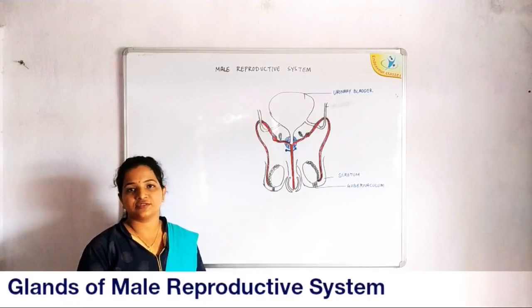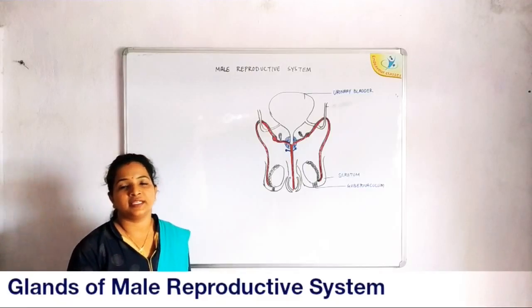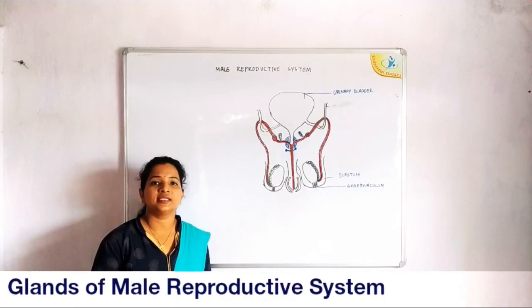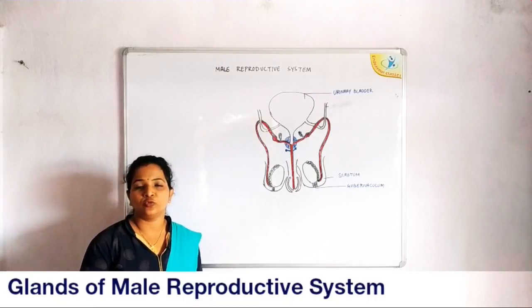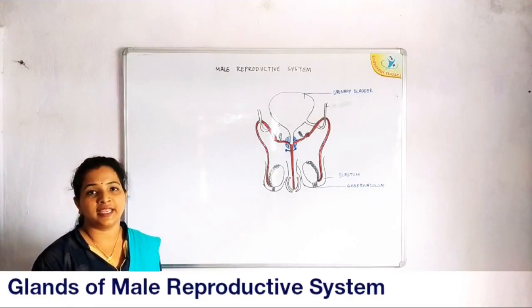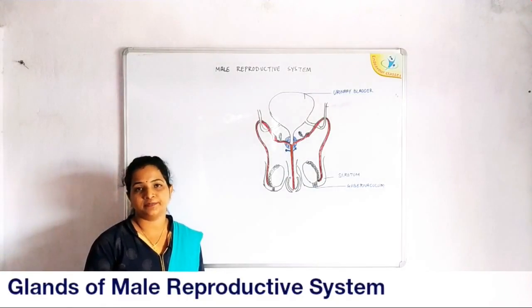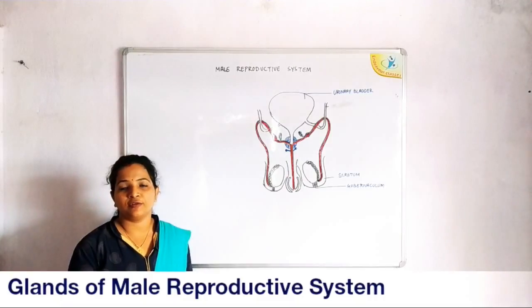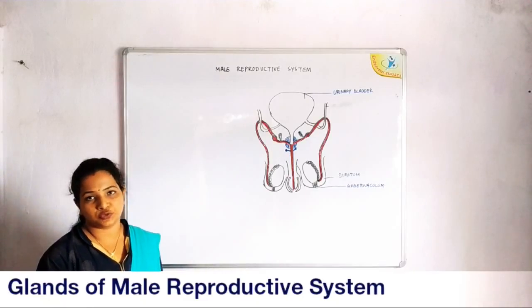We studied the internal structure of the testis and the outer coverings of testis. In the internal structure we studied the lobules. Internally, testis is divided into many lobules, and each lobule has two compartments: the seminiferous tubular compartment and the interstitial compartment. The seminiferous tubules constitute about 80-90% of total testicular volume, and inside them sperms are synthesized. Inside the interstitial compartment there are specialized polyhedral cells called Leydig cells, and their function is to secrete the male androgen, testosterone hormone.